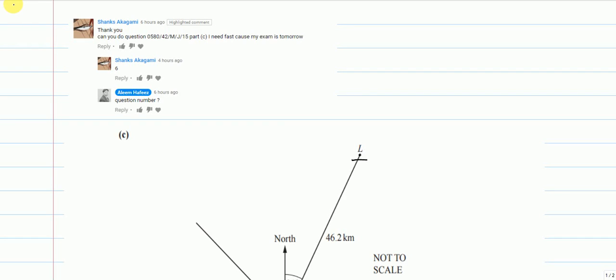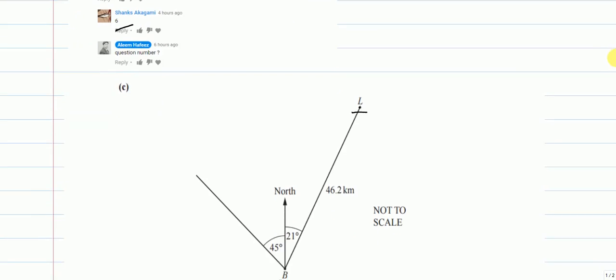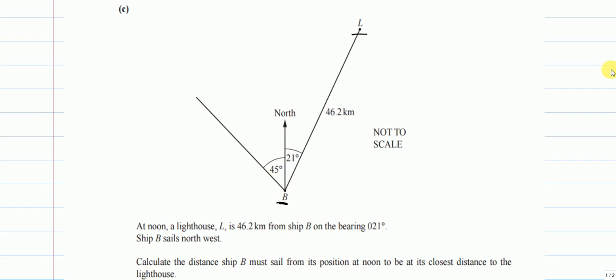Hi, this question was requested by Shanks, question number six part C. At noon, a lighthouse L is 46 kilometers from ship B on a bearing of 21 degrees. Ship B sails northwest, which is at 45 degrees already given.